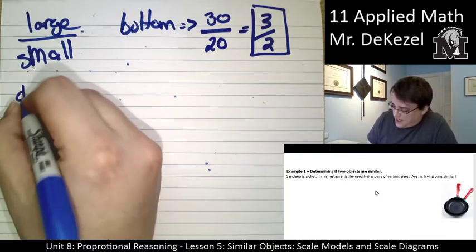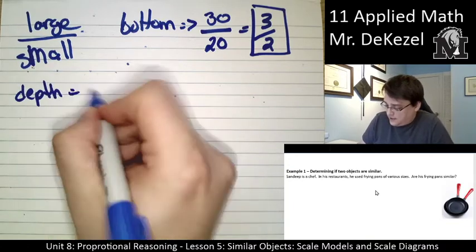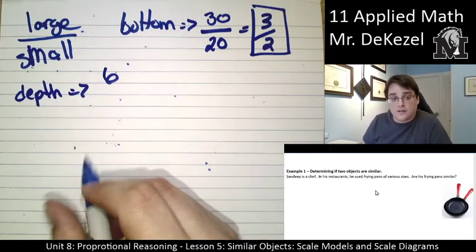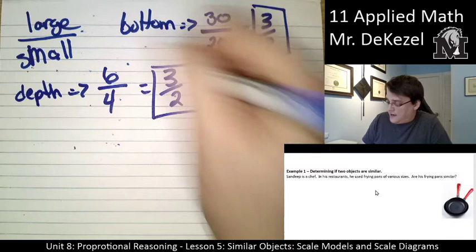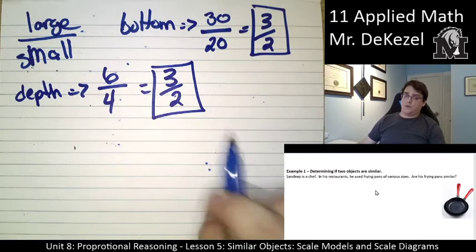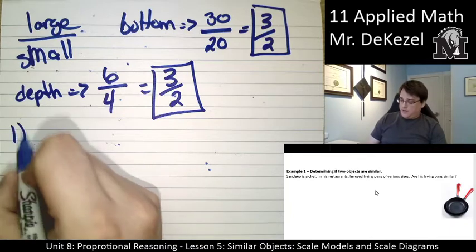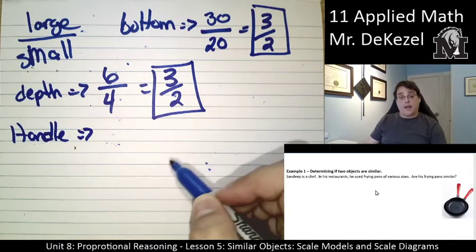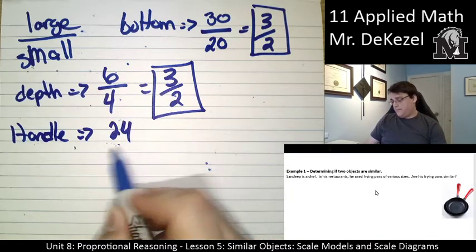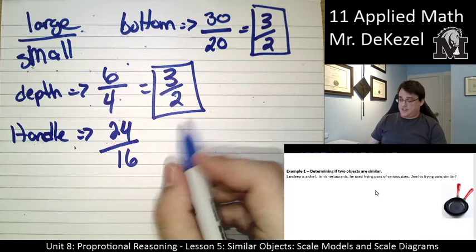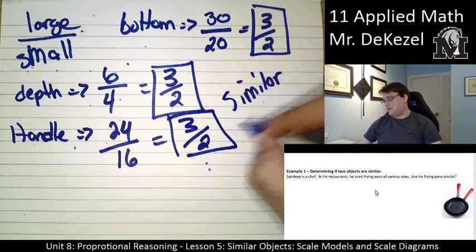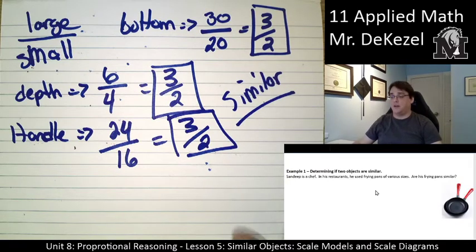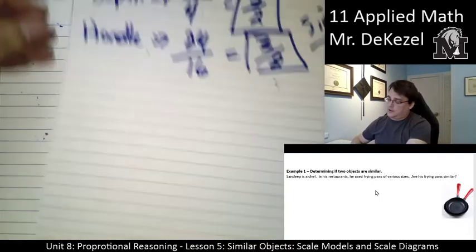What we're going to do is find out if the rest of the parts of the frying pans also have a ratio of 3 to 2 when we do large over small. For the depth of the frying pans, the large depth is 6 centimeters and the small depth is 4. So we can reduce that to 3 halves. So far, so good. Everything is proportional. Same scale factors. Let's talk about the handle. The handle has a length of 24 and the small one of 16. If we reduce that again, we get 3 halves. So that means that these are indeed similar pans.